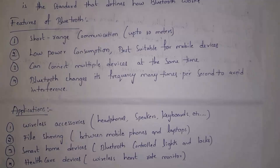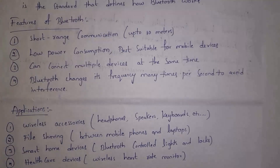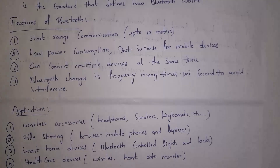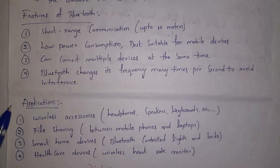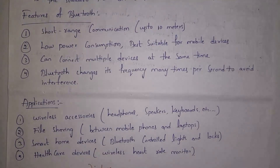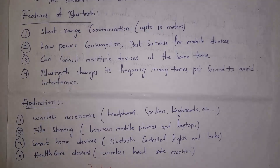Features of Bluetooth: first, shorter range communication — two Bluetooth devices can communicate up to 10 meters away. Bluetooth consumes less power, making it suitable for mobile devices. We can connect multiple devices at the same time. Bluetooth frequency range is not fixed — it changes frequency many times to avoid interference. Applications include wireless accessories such as headphones, wireless speakers, and keyboards, file transfer, smart home devices such as controlling lights and locks, and healthcare devices like wireless heart rate monitors.